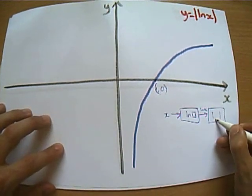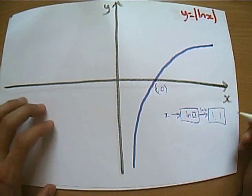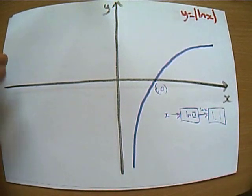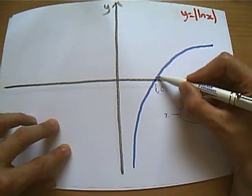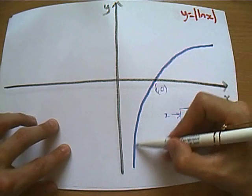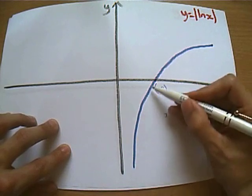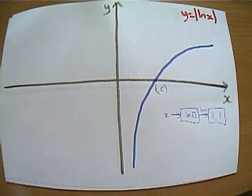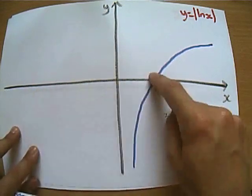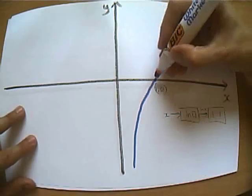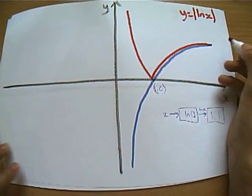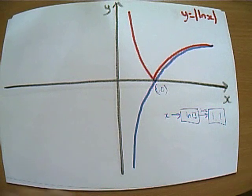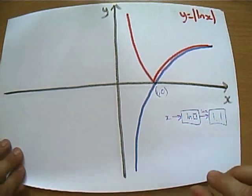Let's remind ourselves: what does mod mean? If it's negative, make it positive. If it's positive, don't change it. So what bits are actually going to change here? Is this bit going to change? No, because the values of ln x here are all positive. It's only these bits here which are going to change. And so effectively, we're going to reflect these bits in the x axis, we're going to bounce it back up like so. So the graph of y equals mod of ln x is that graph.